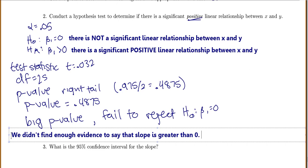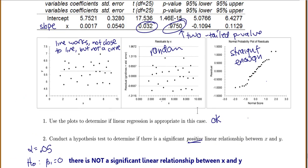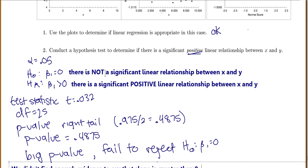We usually leave it there. We didn't find enough evidence to say that the slope is greater than 0. Which makes sense because when I looked at this, it really looked like my slope would be about 0.